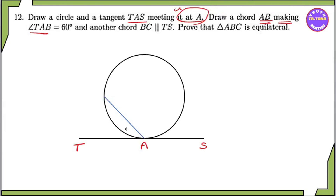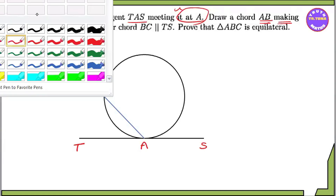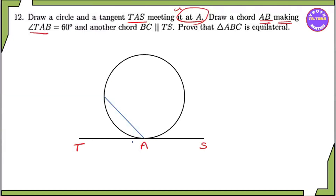When we are in the first place, we have to do the same thing. So if we are in the second place, we can see the same thing. We can see the same thing, and we can see the same thing as the same thing.